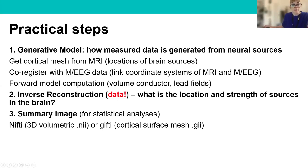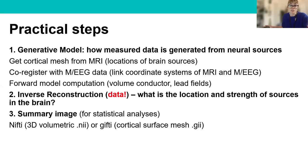Let's look at the practical steps needed to perform this analysis. First, we need to construct a generative model, which tells us how the measured data is generated from neural sources. To do this, we need to get a cortical mesh from an MRI — this gives us the locations of the brain sources. We then need to co-register this mesh with our M and EEG data using at least three points known in each coordinate system, called fiducials.